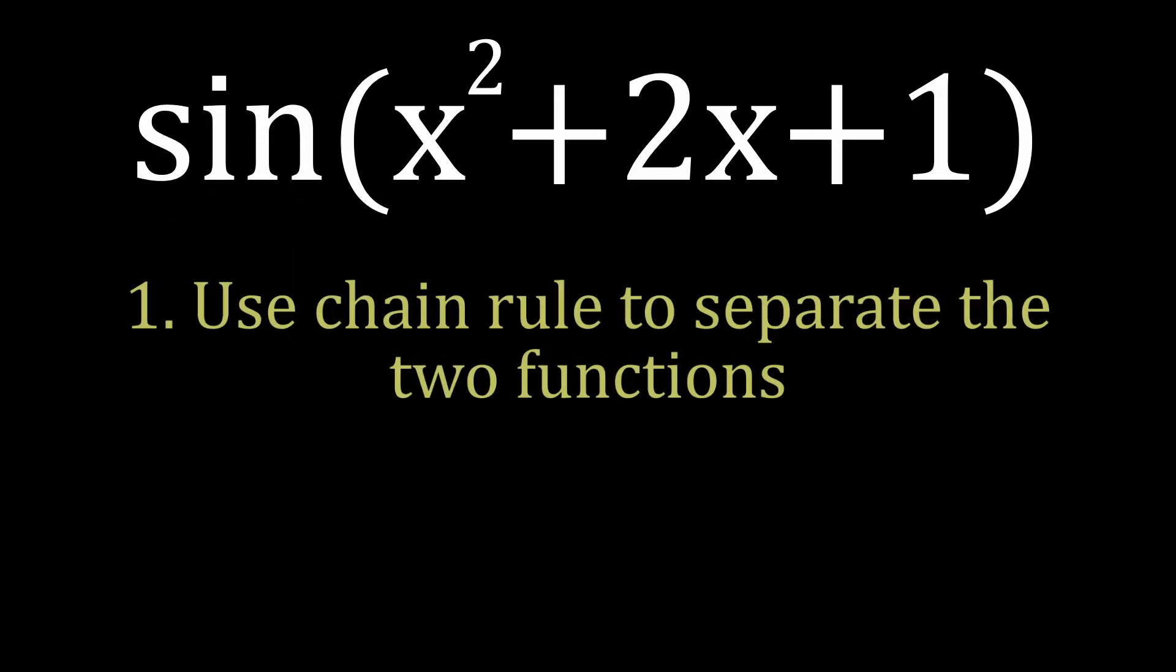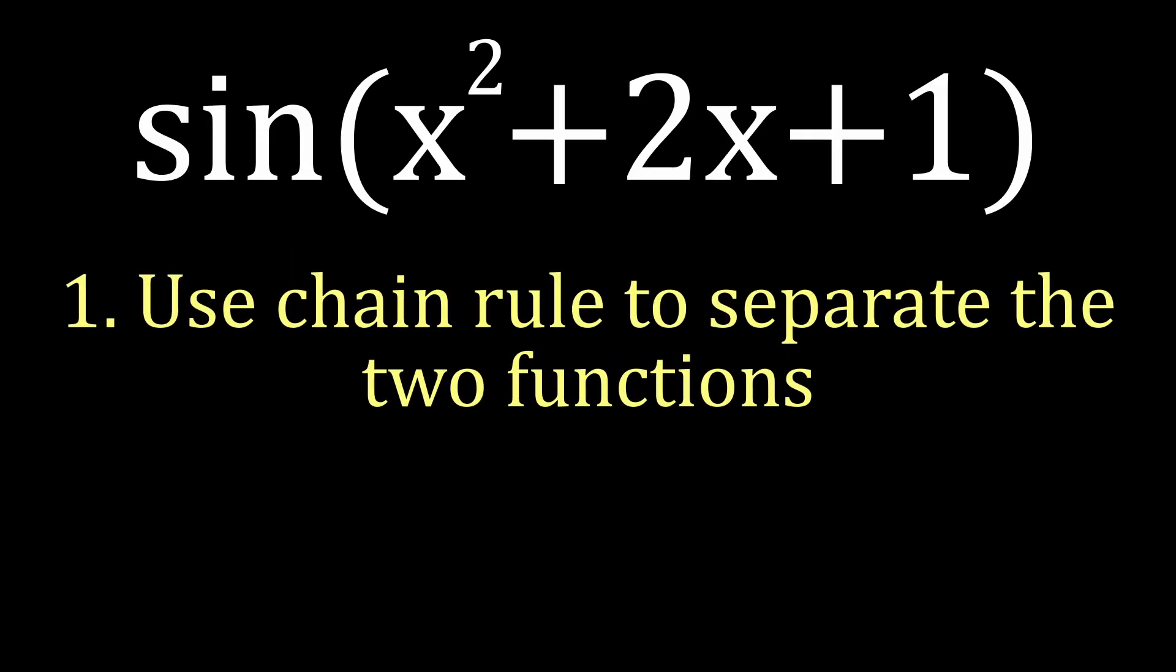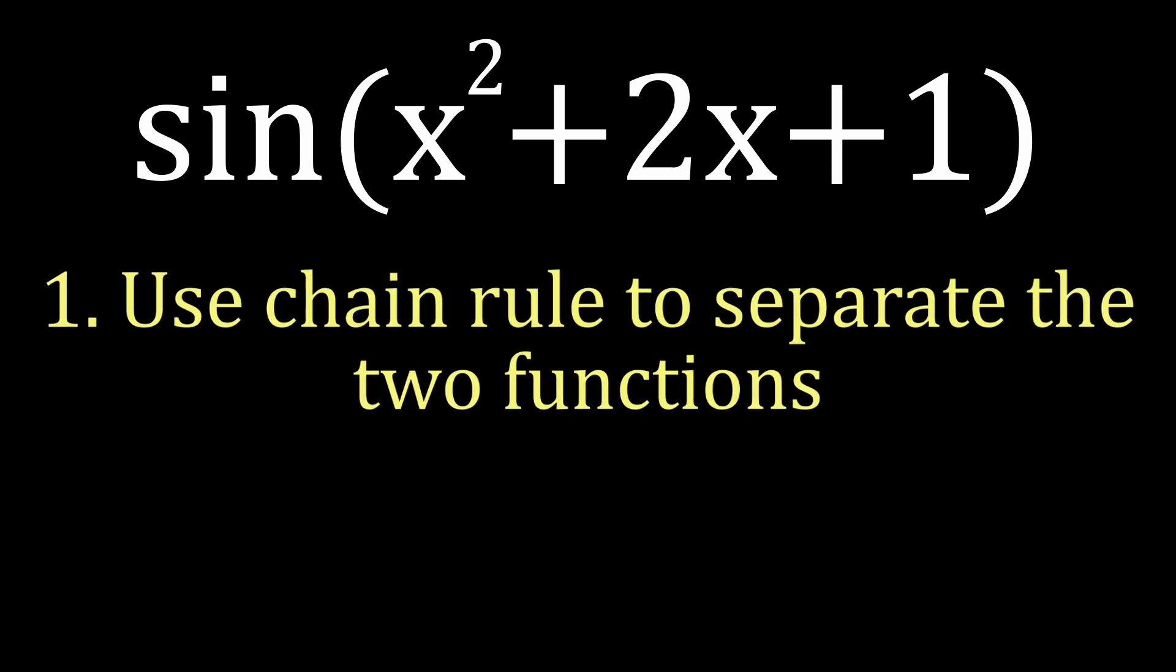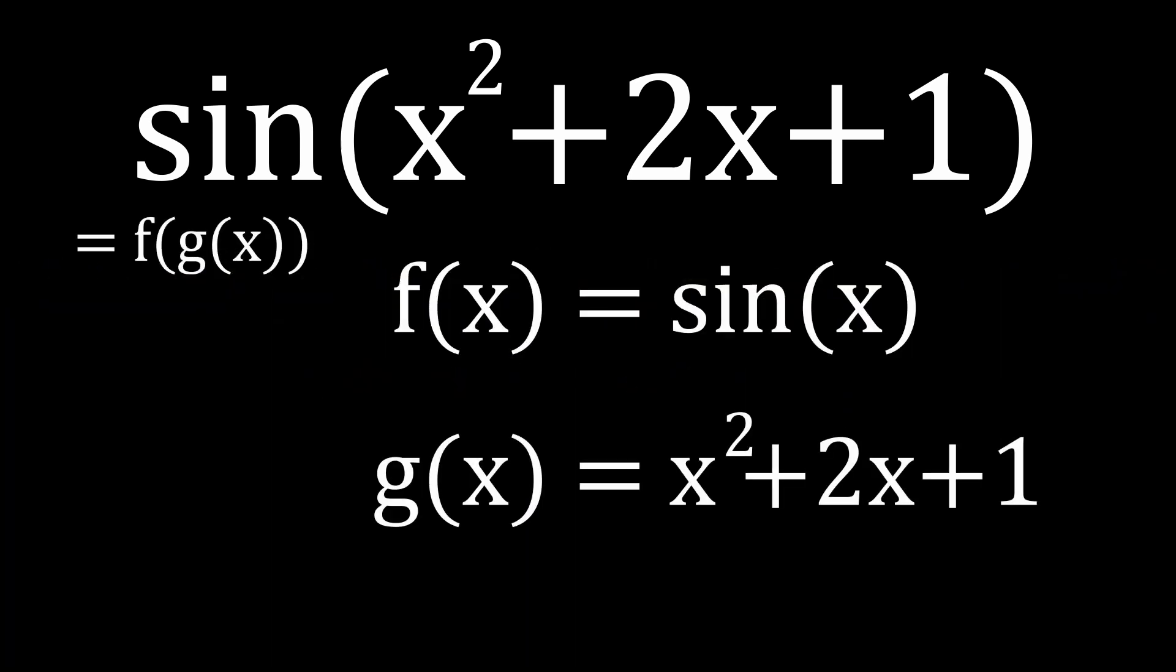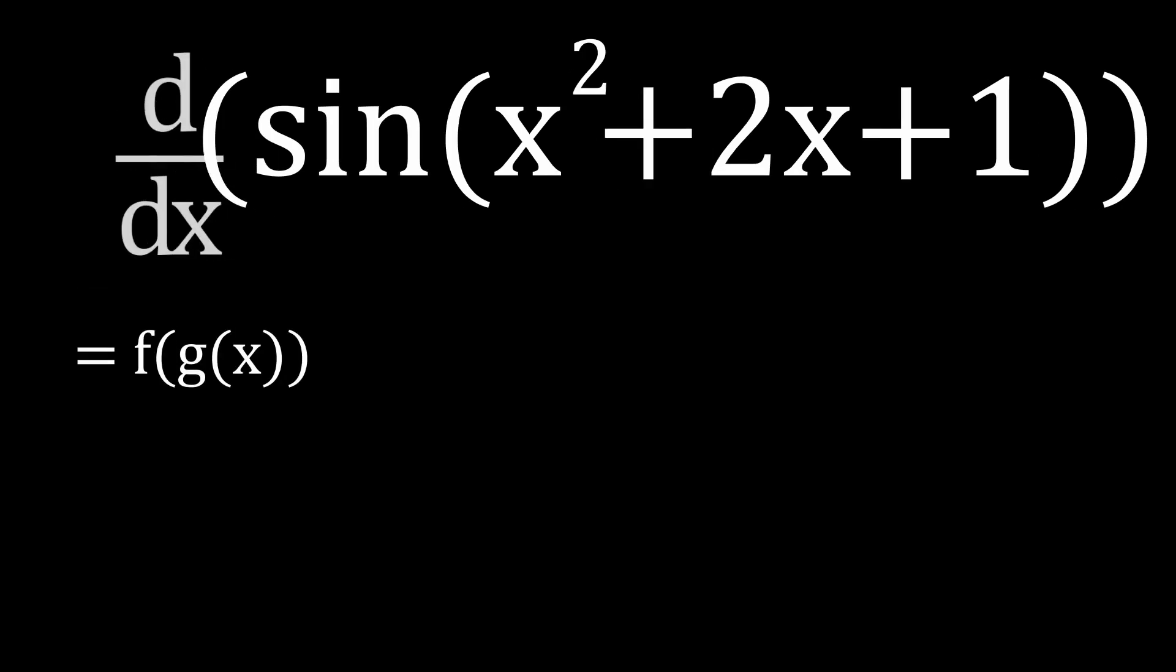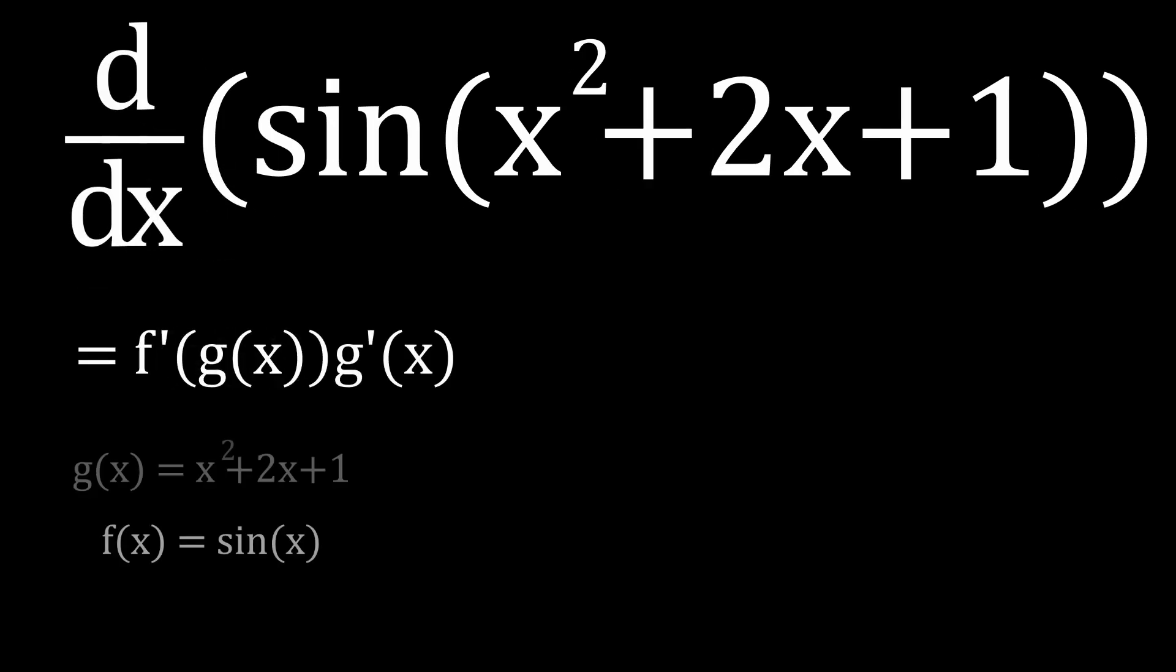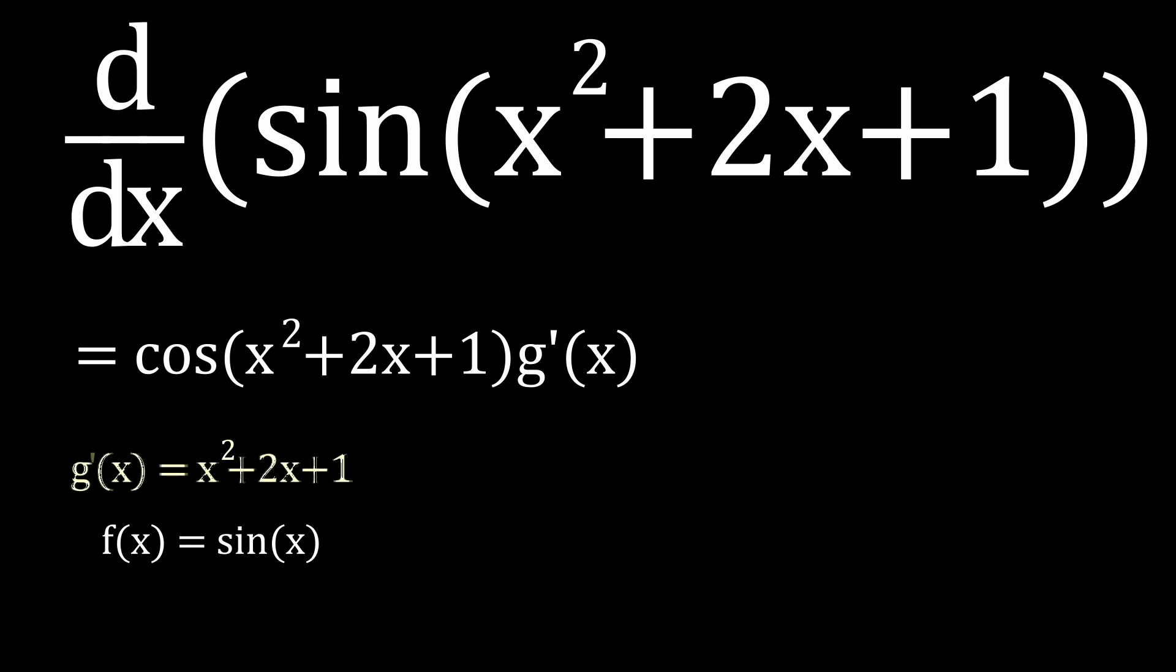First of all, we need to apply the chain rule in order to separate sine from the quadratic polynomial. Let f(x) equal sine(x) and g(x) equal x squared plus 2x plus 1. This means that the derivative of sine of x squared plus 2x plus 1 is equal to the derivative of sine, which we know is cos of g(x), or cos of x squared plus 2x plus 1 multiplied by the derivative of x squared plus 2x plus 1.